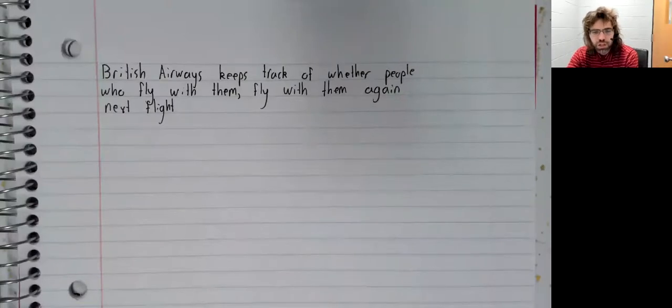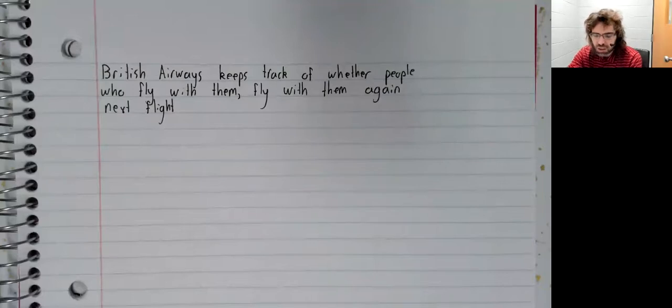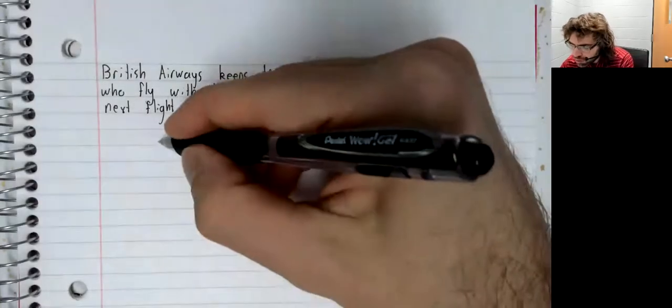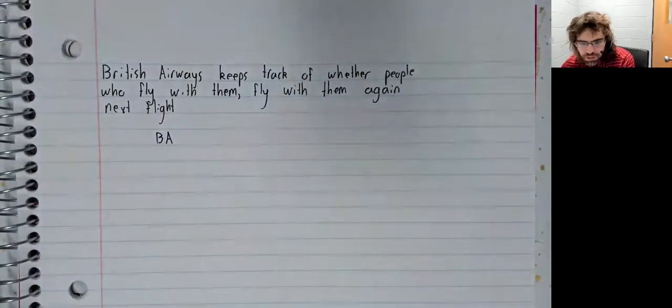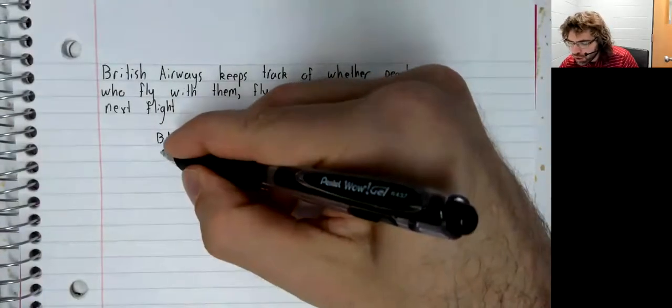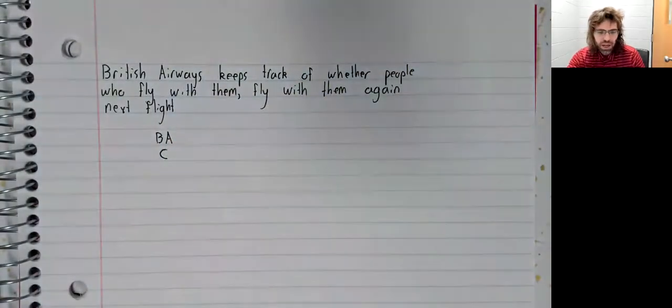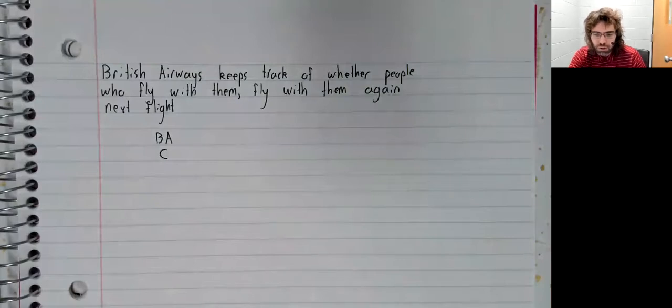Let's say that British Airways keeps track of whether people who fly with them fly with them again next flight. So if we're looking at a traveler, that traveler could occupy one of two states: they could be flying with British Airways or they could be flying with a competitor. And let's say we have the following transition probabilities.